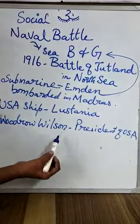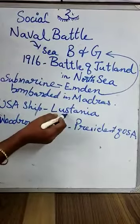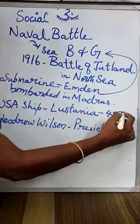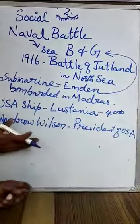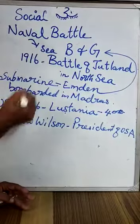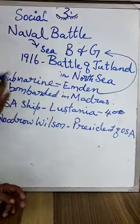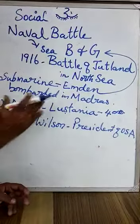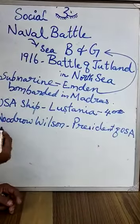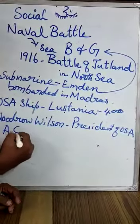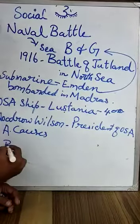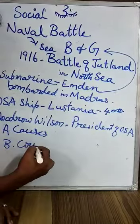Woodrow Wilson was the president and he got angry because in that ship 400 people had lost their lives. So President Woodrow Wilson was angered and started to attack Germany. This comes to a conclusion up to this point. These are the causes of the war, which we already saw. A — Causes. B — Course of the war.